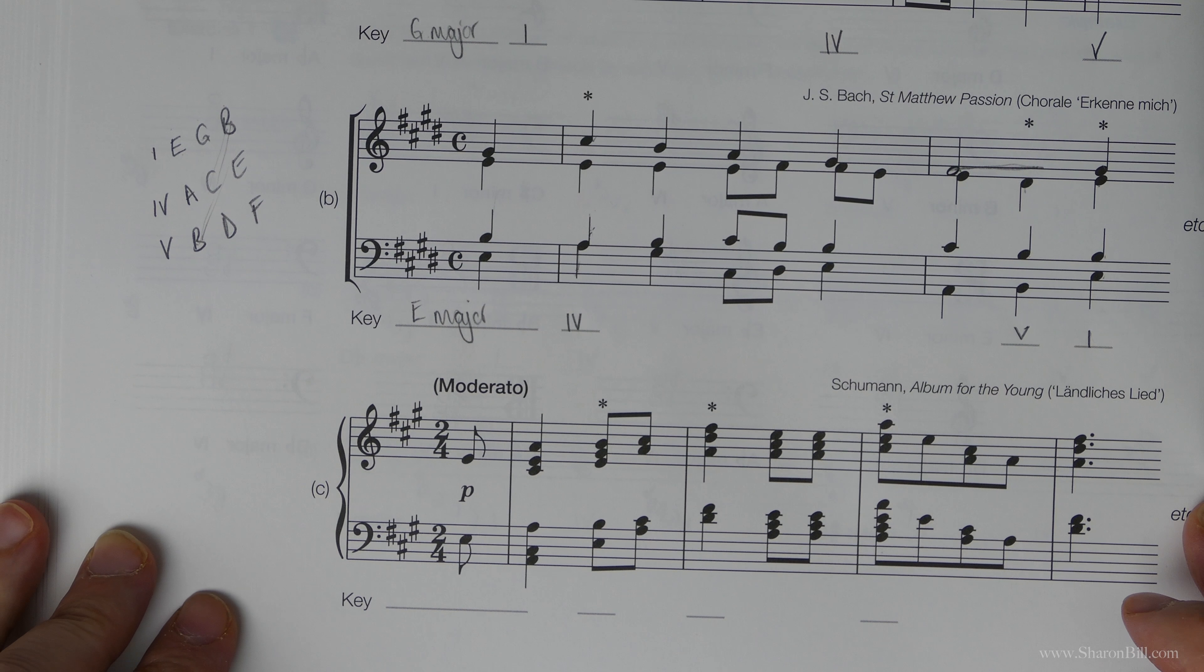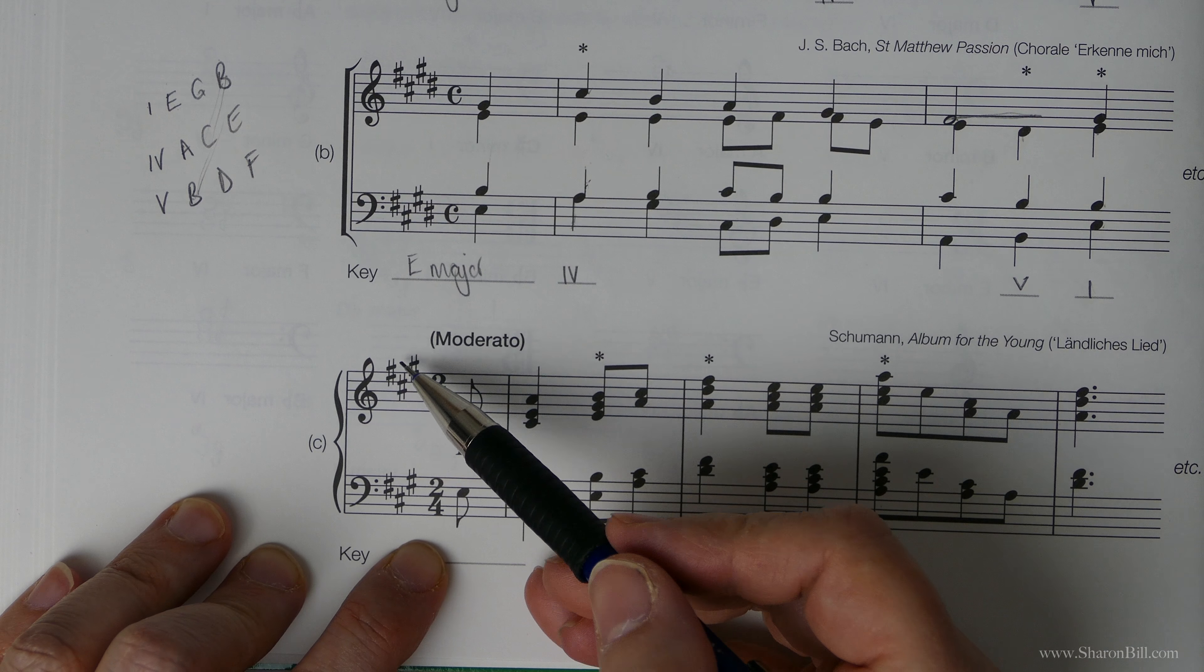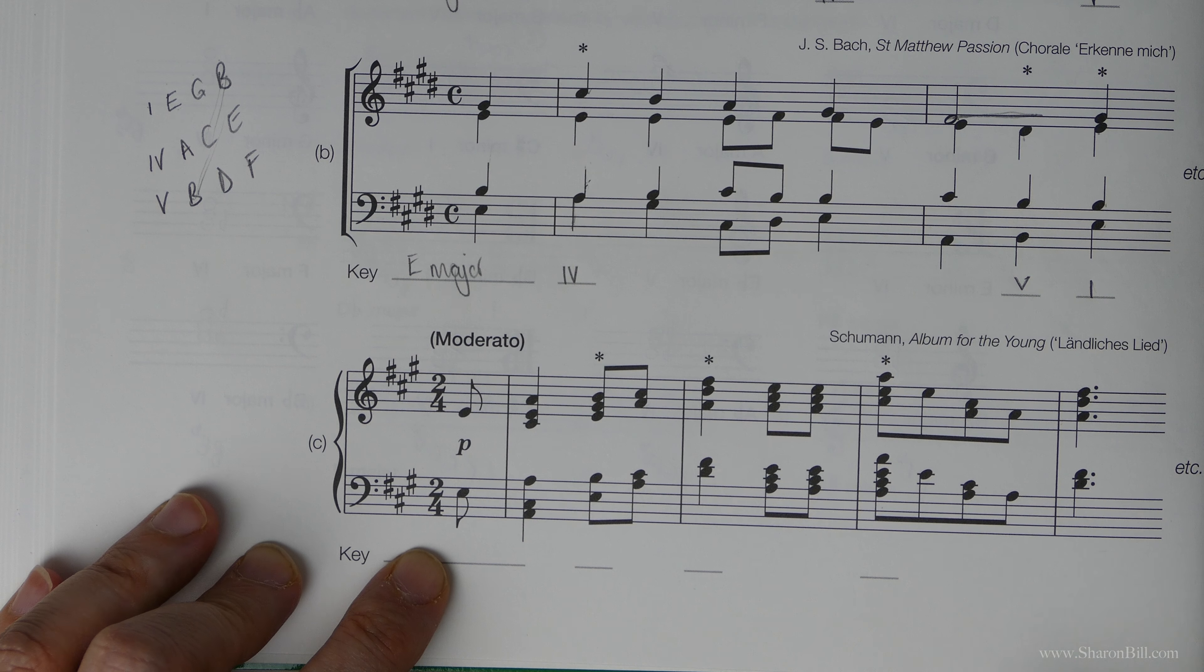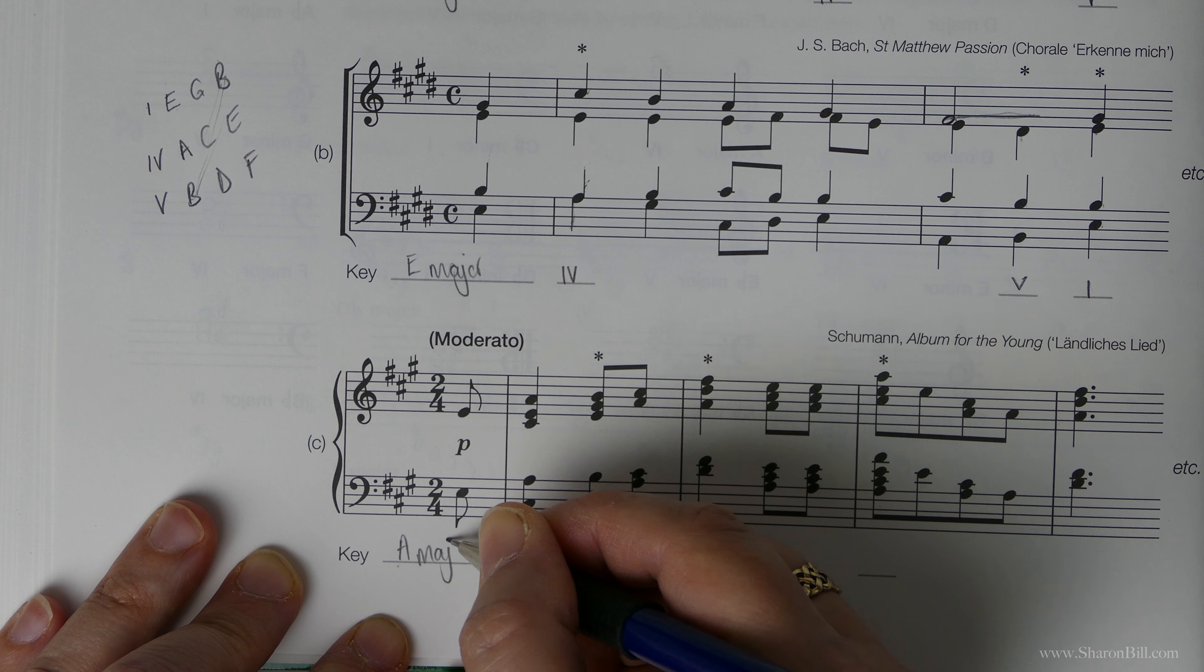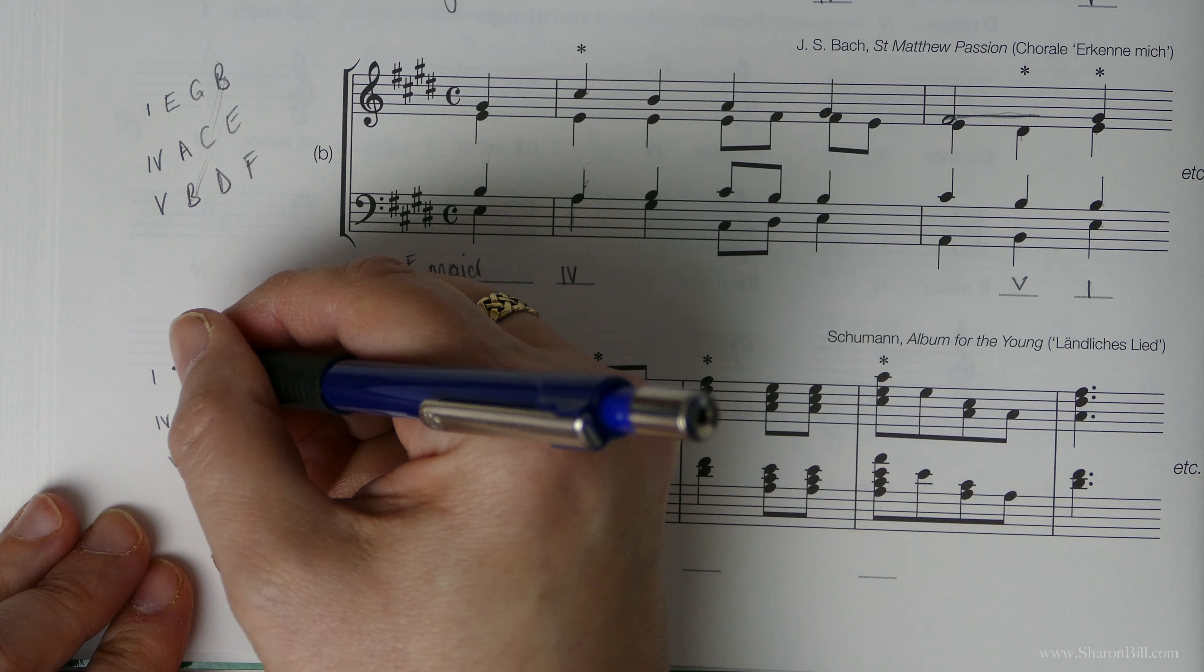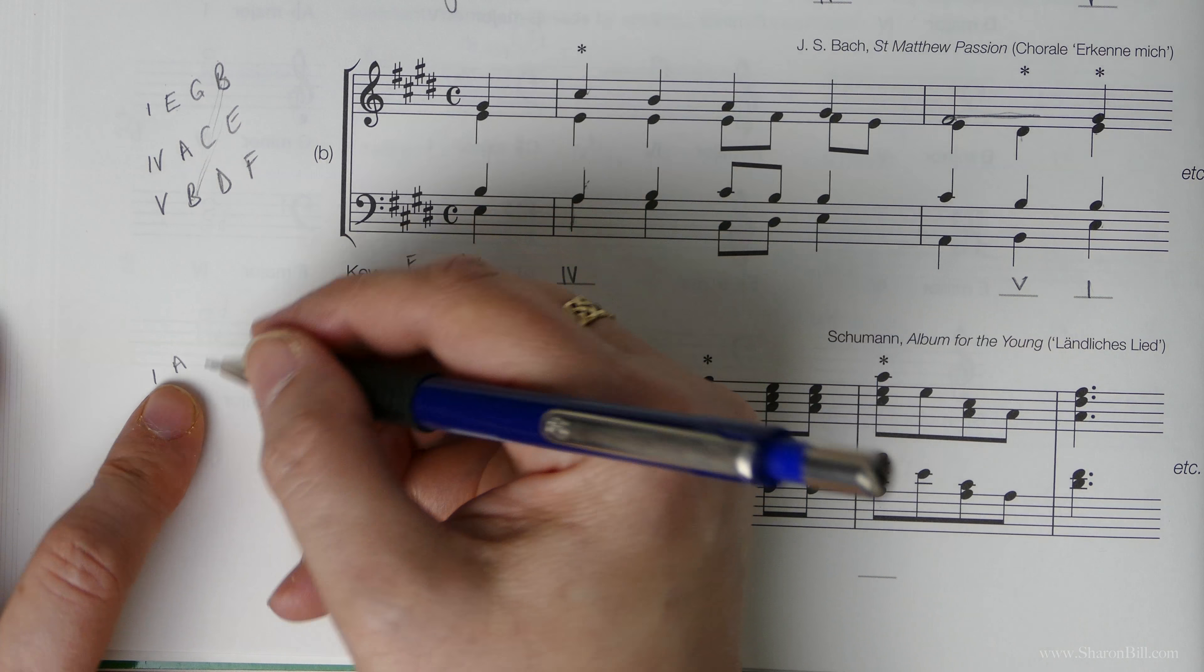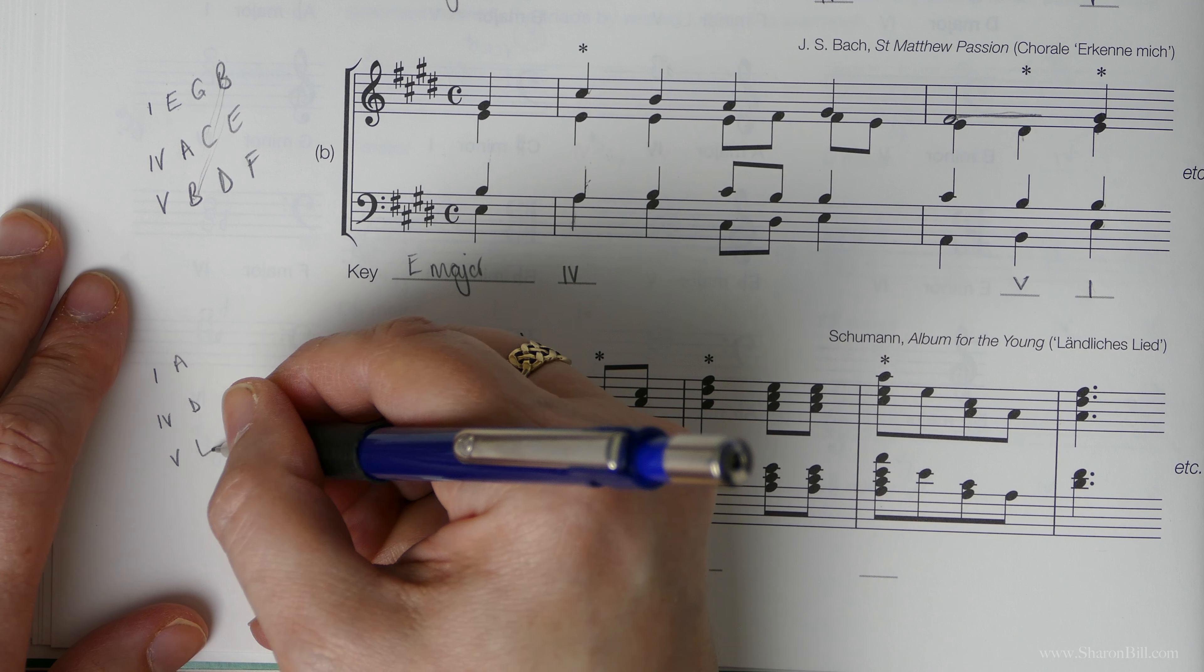Let's have a go at this last one together. So we've got a key signature of three sharps. Nothing else tells us otherwise. So we're in a major key and it would be A major. And so we need to write out our harmonies. 1, 4, and 5. So of course A is chord 1. There's the tonic. A, B, C, D is 4. A, B, C, D, E is 5.